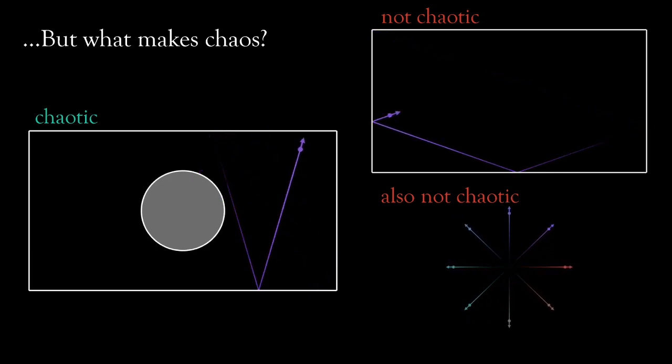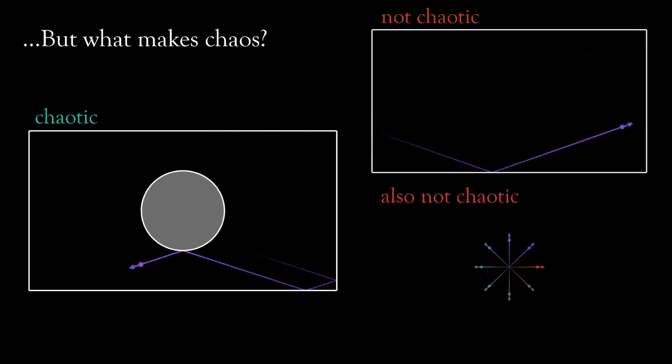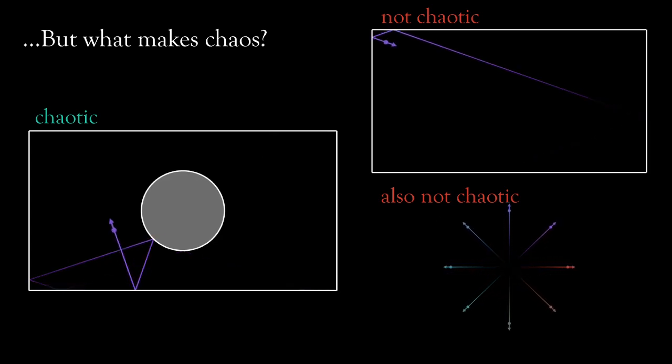Turns out there are two crucial ingredients, each one being present in one of the systems on the right, but only when combined together they create deterministic chaos.